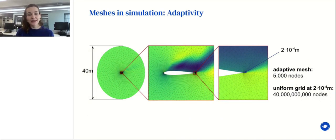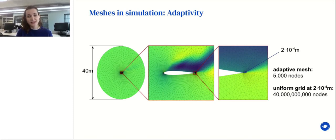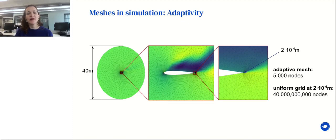I want to highlight the importance of meshes and adaptivity for optimal usage of resource budget. We can easily adapt the mesh resolution according to the scale and complexity of the dynamics in different regions. In this airfoil example, the domain is 40 meters wide, but we have accuracy of 0.2 millimeters around the wingtip. This mesh has only 5,000 nodes, while a uniform grid would require 40 billion nodes to have this precision.